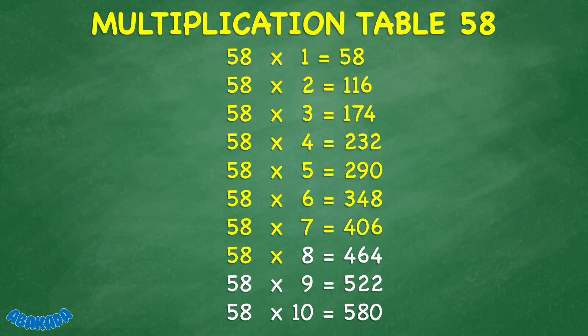58 times 8 equals 464. 58 times 9 equals 522. 58 times 10 equals 580.